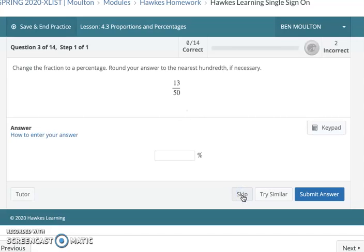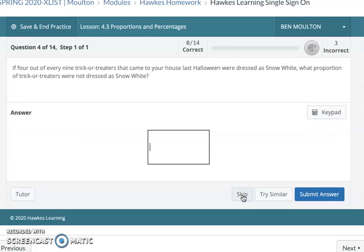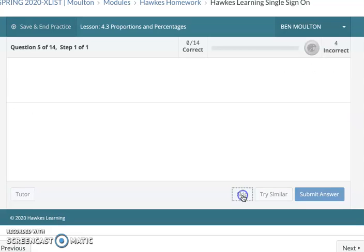That one's not bad either. This one's going to be cake. Just divide it and multiply by 100. Four out of every nine trick-or-treaters that came to your house last Halloween were dressed as Snow White. What proportion of trick-or-treaters was not dressed as Snow White? Well, that's 4 out of 9 are, that means 5 out of 9 aren't. That one's pretty easy, I think.